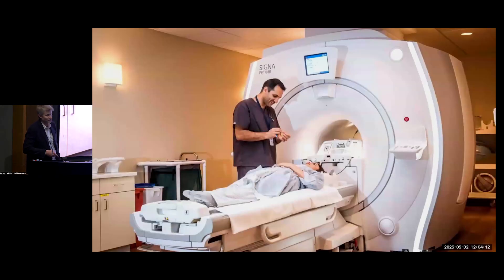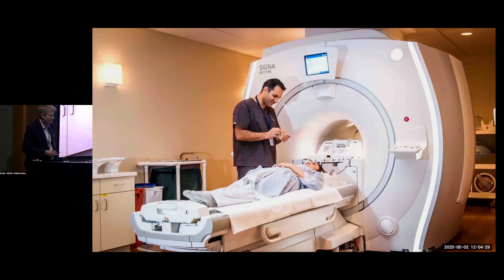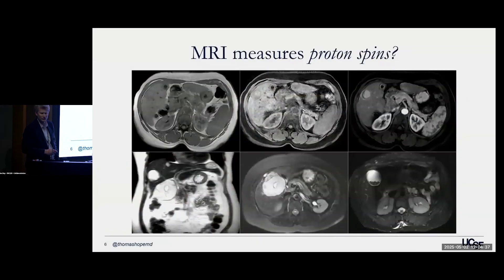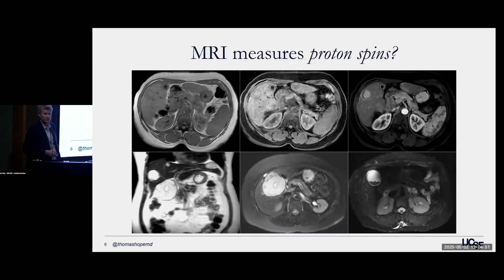The next imaging modality is the dreaded MRI — the loud machine. You have to wear earplugs and you're claustrophobic. We use this primarily in prostate cancer to look at the prostate itself, looking at extra capsular extension, T-staging, trying to determine whether or not you actually have cancer in your prostate. It actually images proton spins, which is sort of crazy to think about. You're imaging how these protons interact with the magnetic field and converting that information into images. It has very different spatial resolution, but the tissue contrast in MRI is pretty amazing.